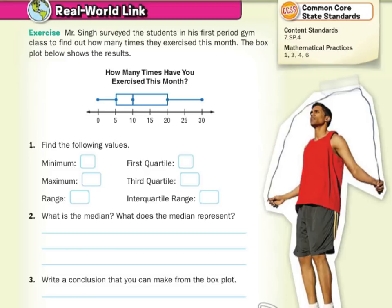The minimum is the least value, the smallest value in the data set, and that's down here at 0. The maximum is the greatest value in a data set — that's the largest, up there at 30. The range is the difference between the greatest value and the least value, so the range is 30 minus 0, which is 30.